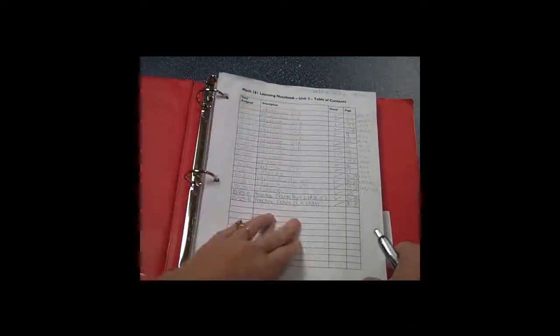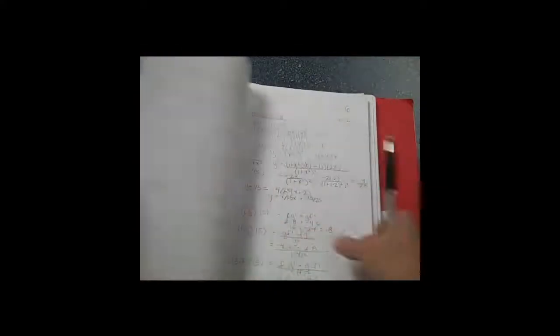Some of the students choose to use binders for their learning notebooks. So here's another example of a notebook with all of the assignments written down, all of the page numbers. And this student has their page numbers at the top of the page. I'll just flip through a few pages here so you can see the work in here.